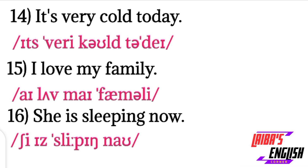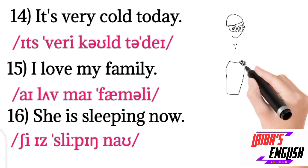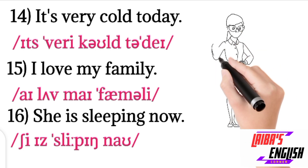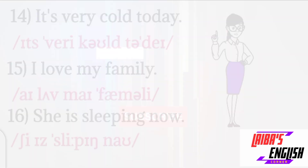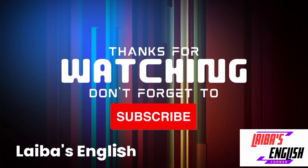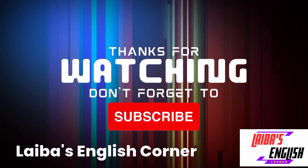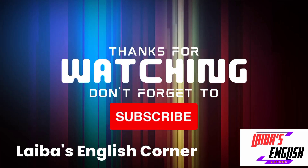The last sentence is: She is sleeping now. 'She' is represented with the 'sh' digraph and long 'ee' sound. For 'sleeping': S, L, long 'ee,' and 'ing.' For 'now': N sound and 'oh' sound. So thank you so much for watching. Don't forget to subscribe to Liba's English Corner. Practice makes a man perfect.